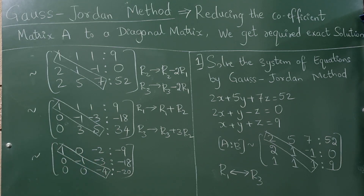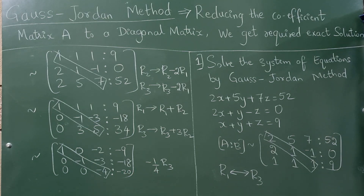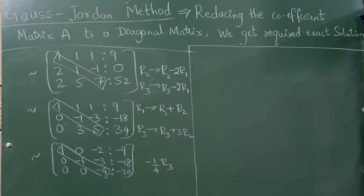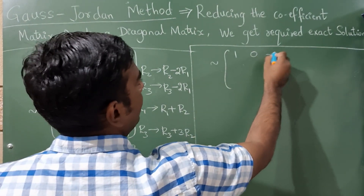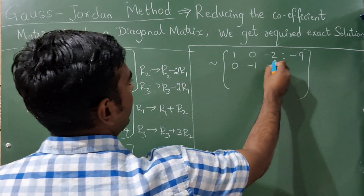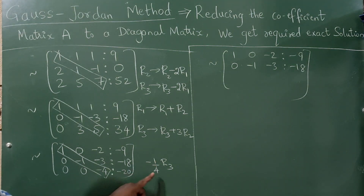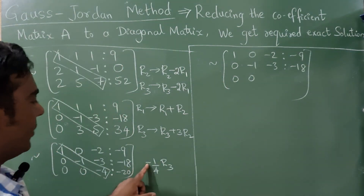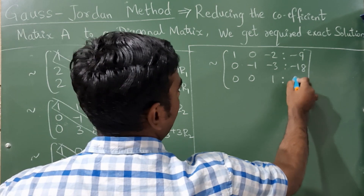Before that, divide R3 by -1/4. Write the first and second rows as it is: row 1 is 1, 0, -2, -9; row 2 is 0, -1, -3, -18. For the third row divided by -1/4: negative times negative is positive, 4/4 = 1, and 20/4 = 5. So R3 becomes 0, 0, 1, 5.